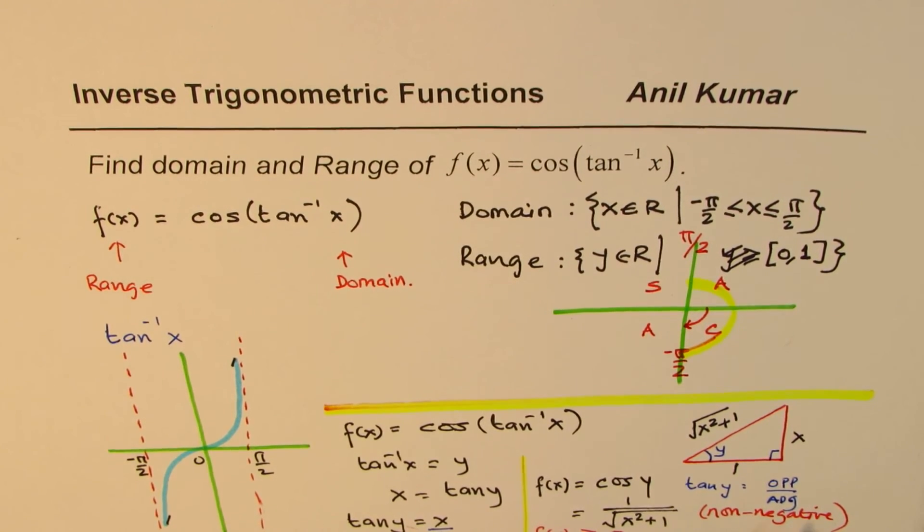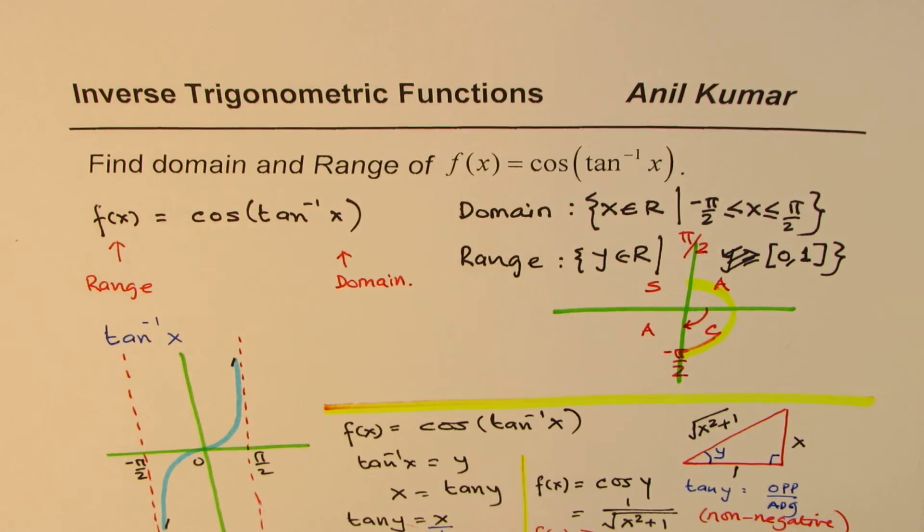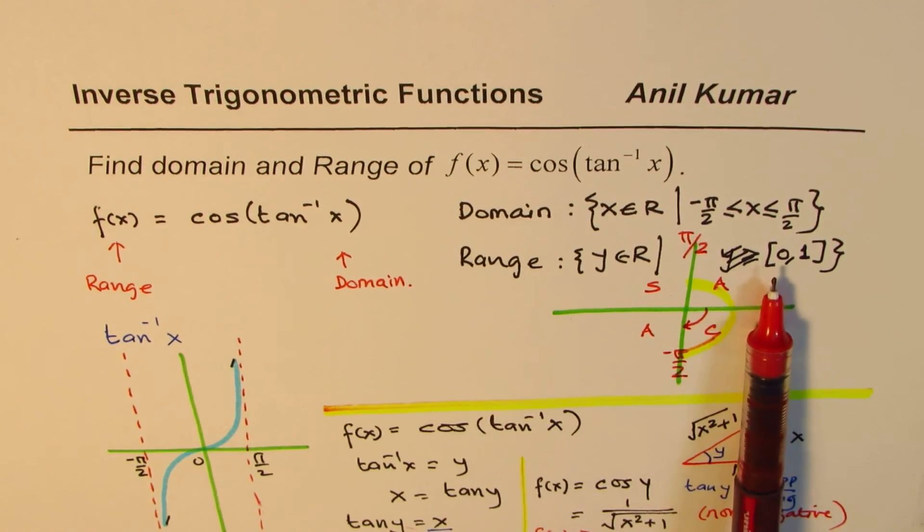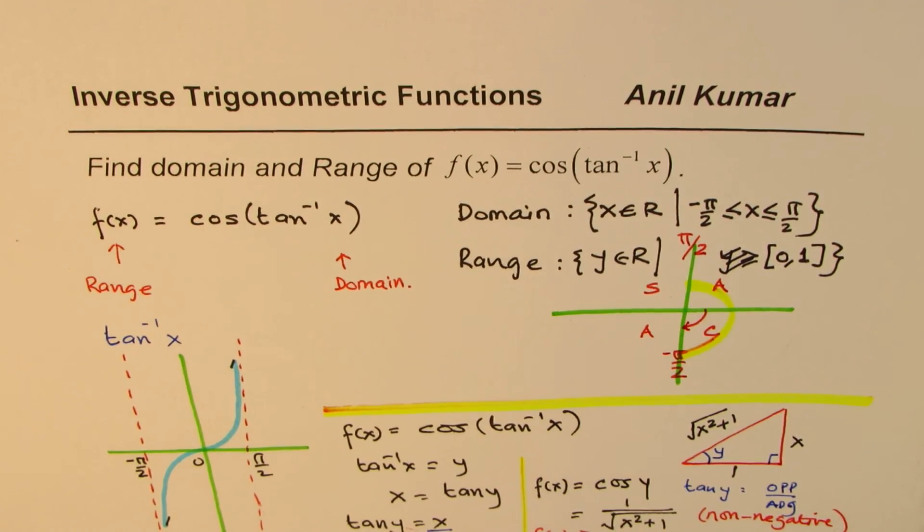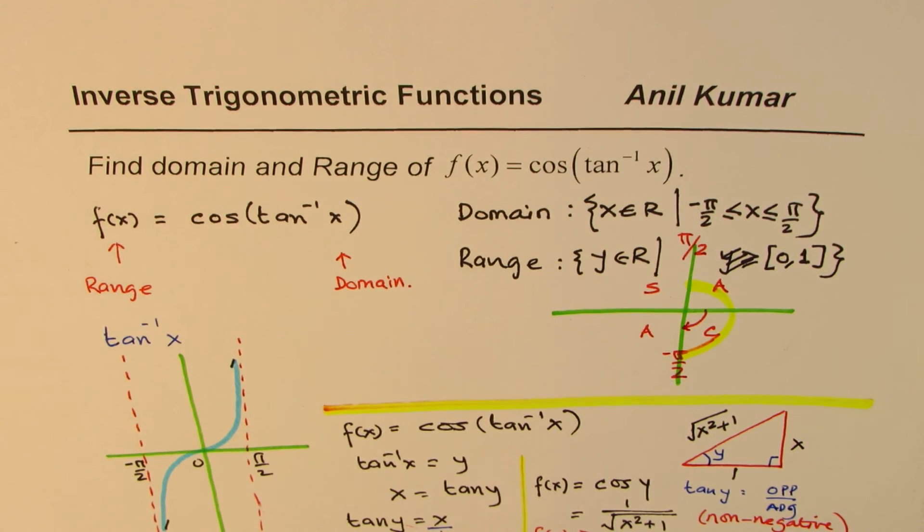So cos(y) is always going to be positive, non-negative, and therefore the range of this function will be from 0 to 1. That is how we can understand range of this particular function. I'm Anil Kumar and I hope that helps. Both the approaches are the right ways of looking into it. You can adopt the approach which you want. And keep sharing your views and thoughts and your questions.